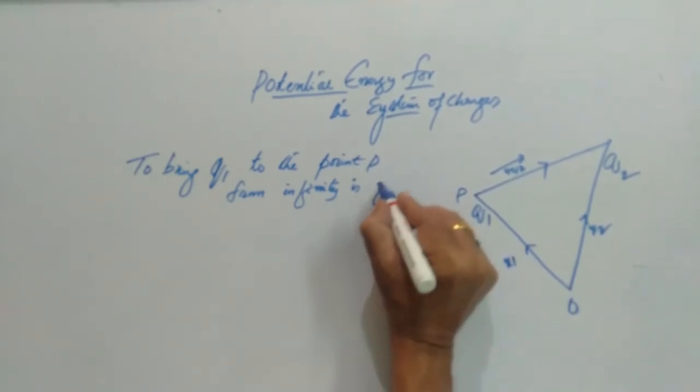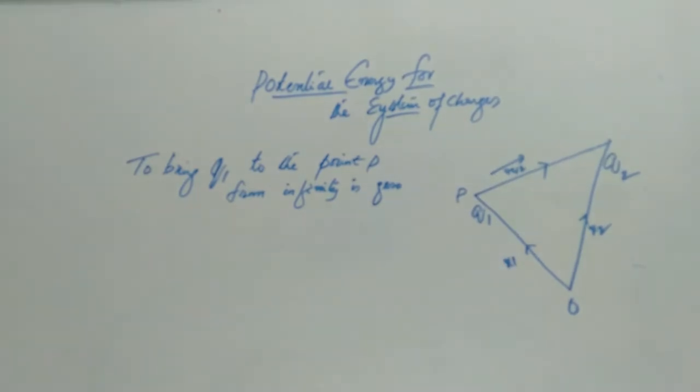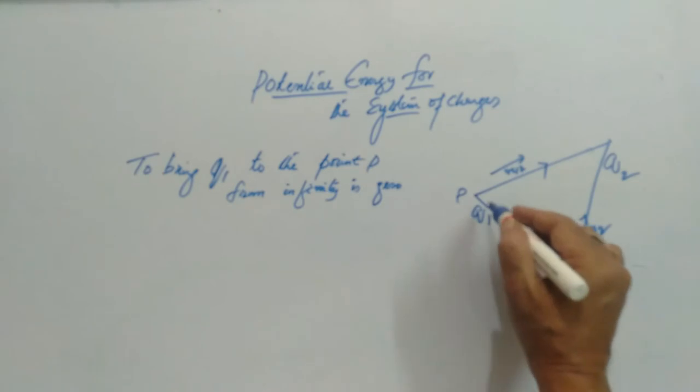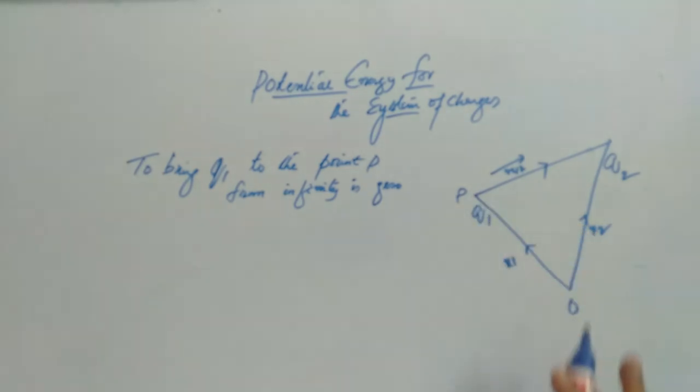Why is it zero? Because before putting this Q1 charge, no other charges are there. So no field is there to oppose the movement of Q1. Therefore it is zero. That means we need not do any work to put a point charge at P.